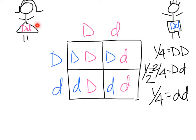From heterozygous mom and heterozygous dad, the probability of an offspring having the homozygous recessive genotype is one-fourth. The homozygous dominant is one-fourth. Being heterozygous, just like mom and dad, half the offspring should be like that. So there you have it.